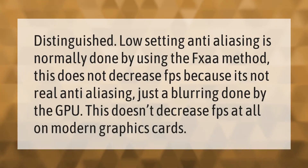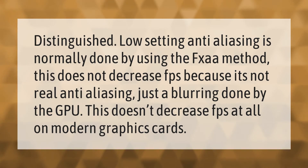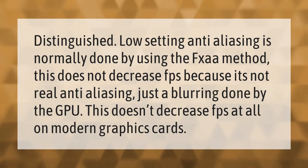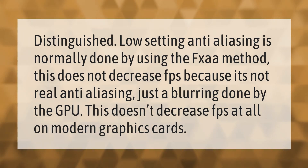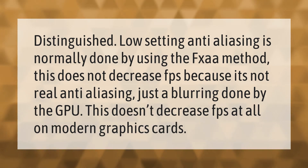Low setting anti-aliasing is normally done by using the FXAA method. This does not decrease FPS because it's not real anti-aliasing — just a blurring done by the GPU. This doesn't decrease FPS at all on modern graphics cards.